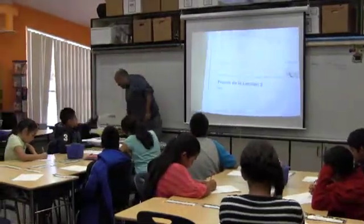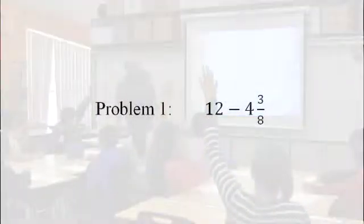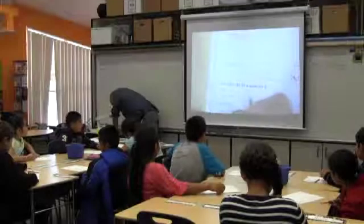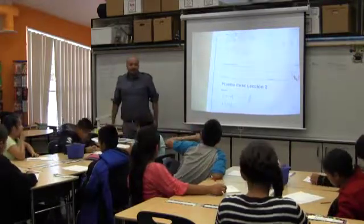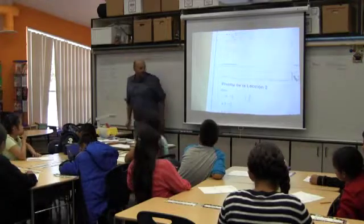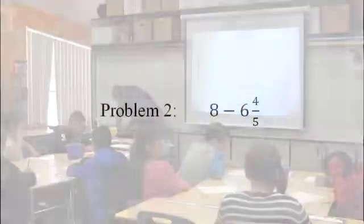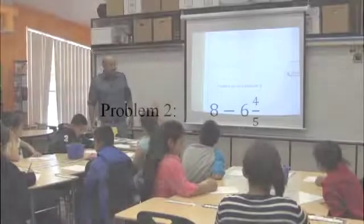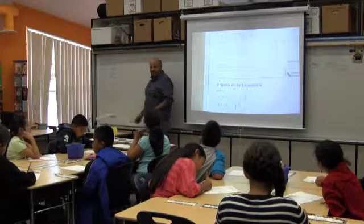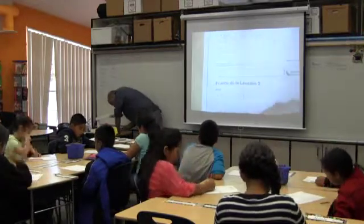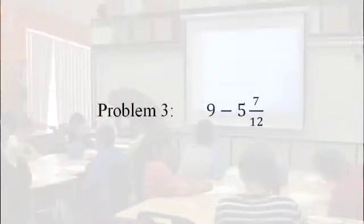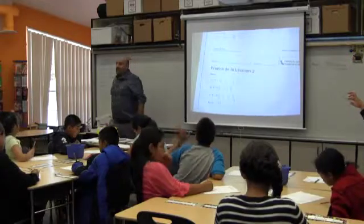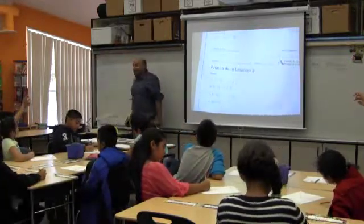We're going to go on, but can somebody tell me the answer for number one? Jocelyn, what did you get? Seven and five-eighths. Did everybody get seven and five-eighths? Yes. Mikayla, what did you get for number two? One and one-fifth. Everybody got one and one-fifth. Amy, what's the answer for number three? Three and five-twelfths. Everybody got three and five-twelfths? Yes. It's okay if you got something different — you can let me know.